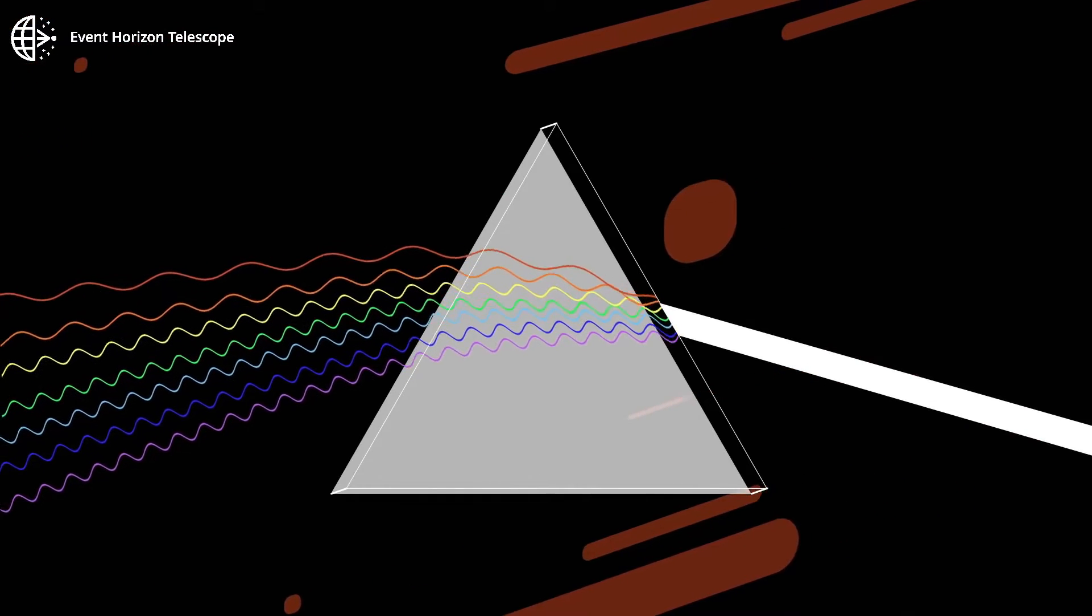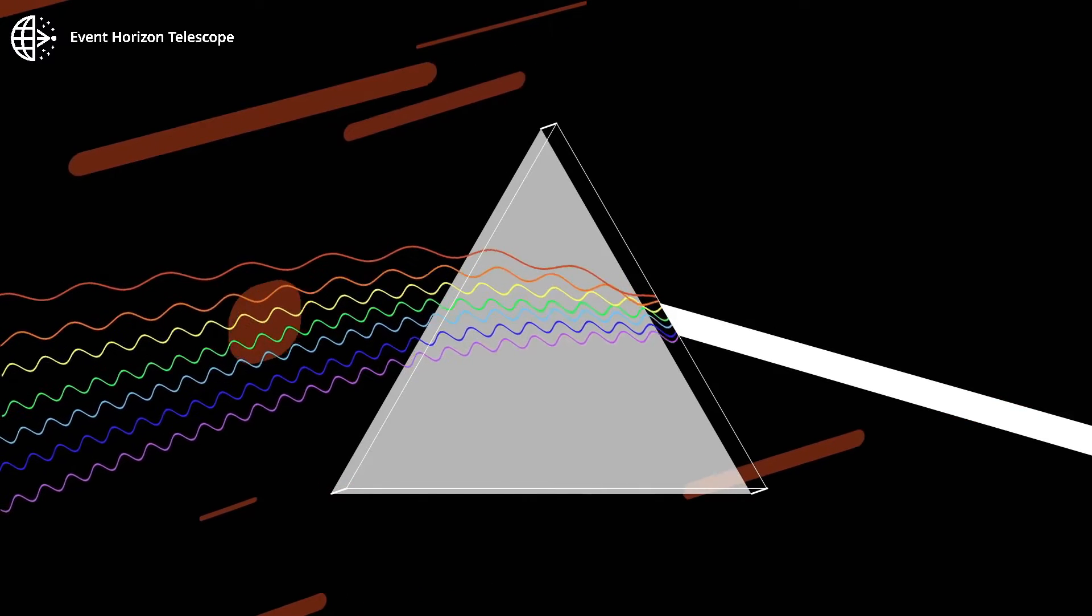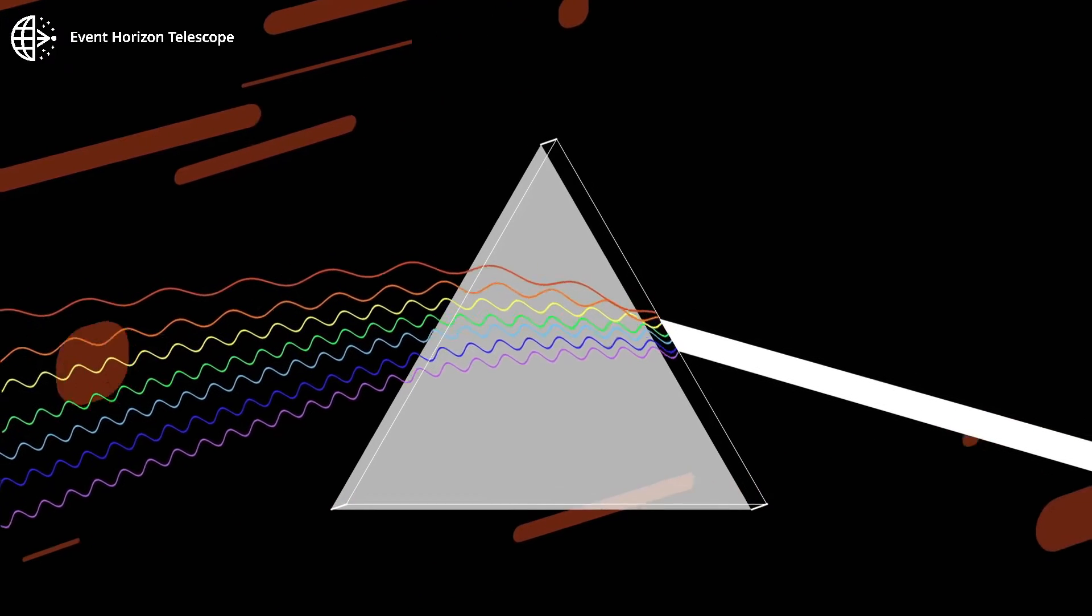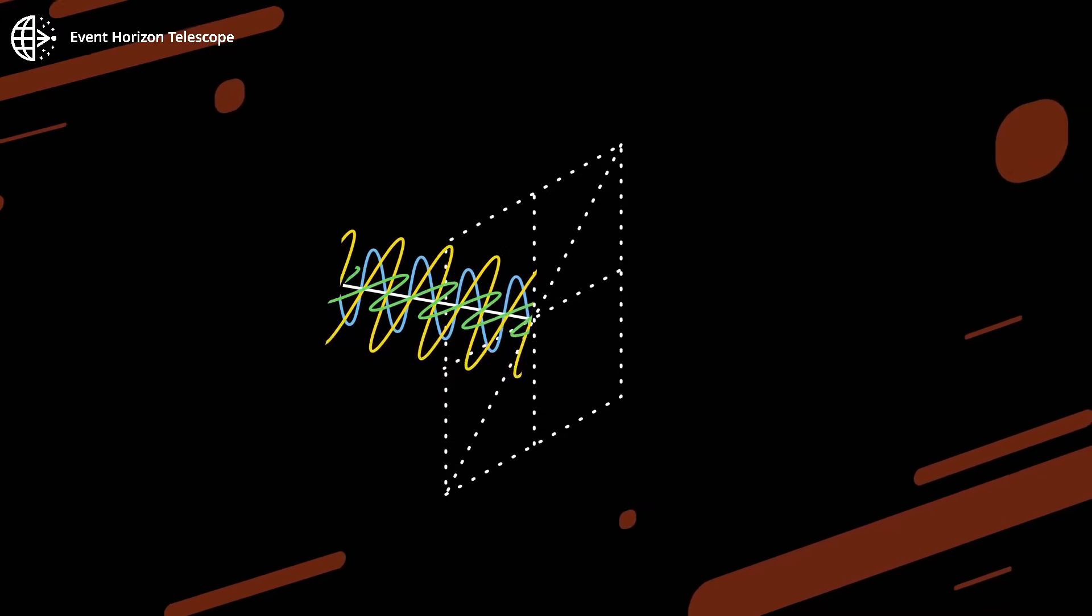The electric field component of a light wave can oscillate in any direction perpendicular to the direction of travel. Light from the sun oscillates in all directions. We say it is unpolarized.